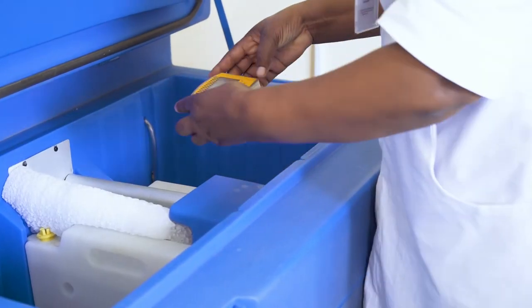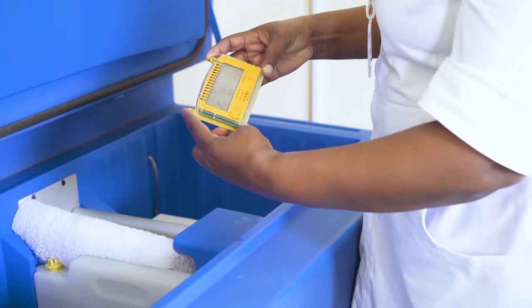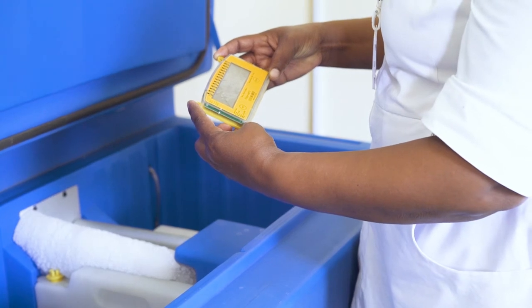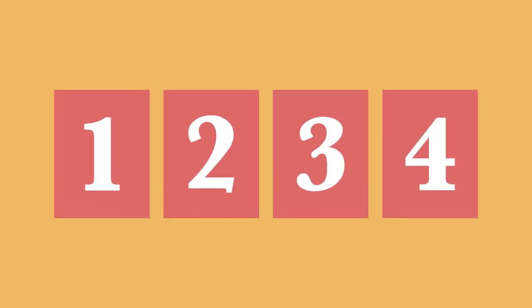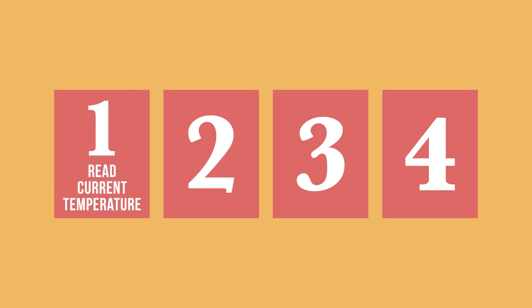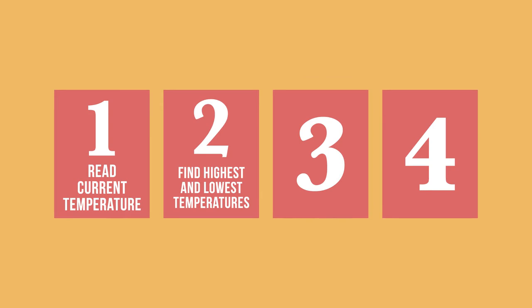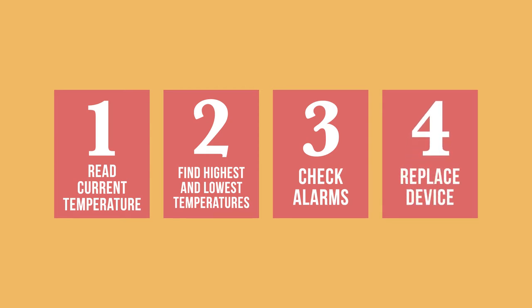In this video, we will show you how to interpret the information you might see on a fridge tag so you can better monitor vaccine temperatures. There are four tasks you must be able to do on your fridge tag: read the current temperature; find the highest and lowest temperatures recorded for the day; determine whether any temperature alarms have been triggered and when; and recognize when you need a new device.